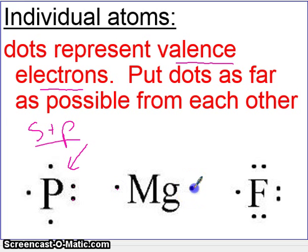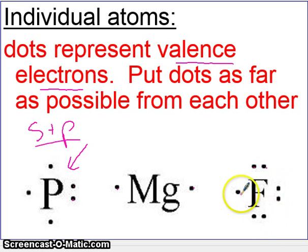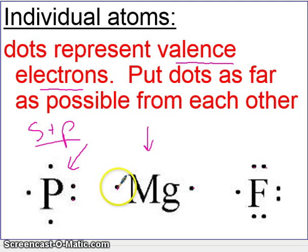Magnesium has two, fluorine has seven. Now you'll notice that we try to put the dots as far as possible from each other, especially in the case of magnesium — notice they're on opposite sides. That's to represent the fact that electrons repel each other. You always want to put them as far as possible from each other.